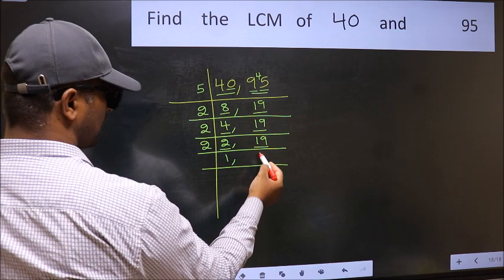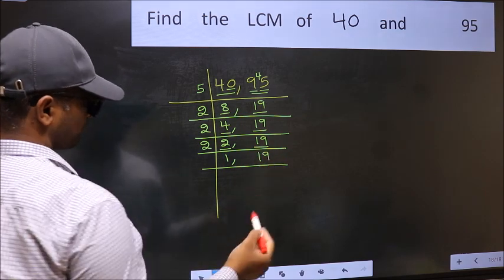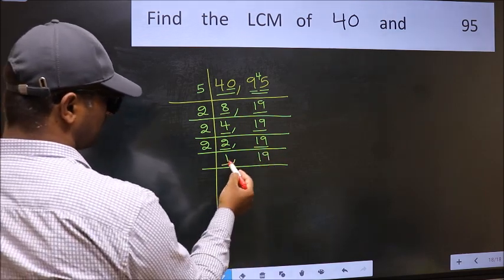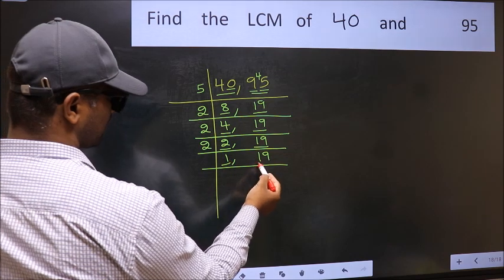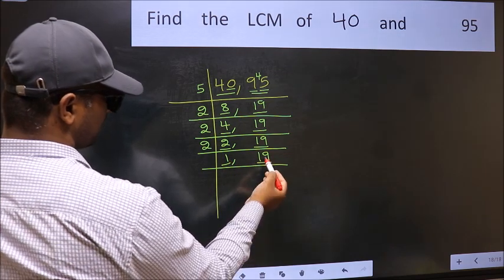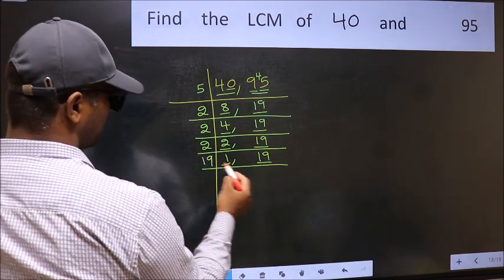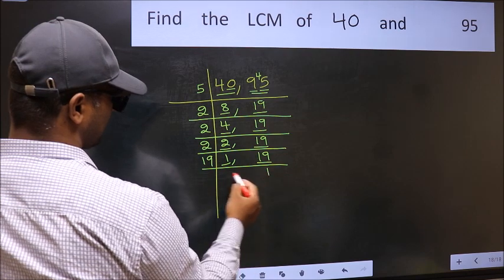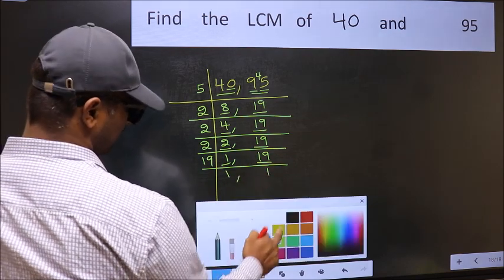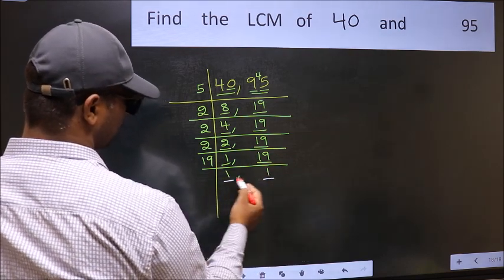Now we got 1 here. So focus on the next number, 19. 19 is a prime number, so 19 times 1 is 19. We got 1 in both places.